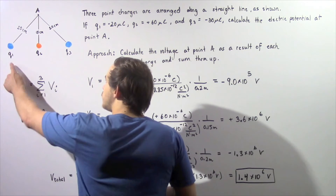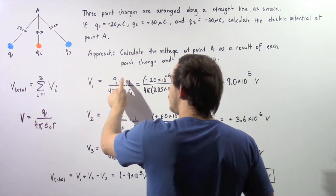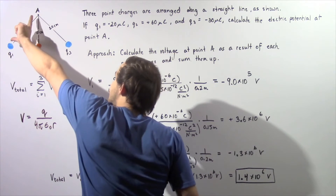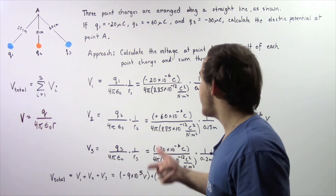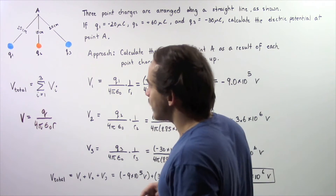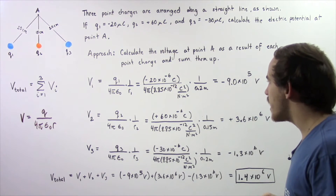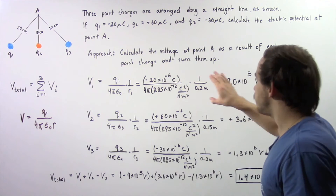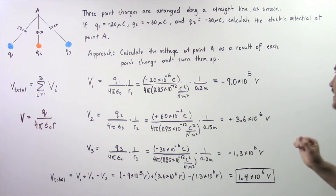Let's begin with charge Q1. The voltage at point A as a result of Q1 is equal to Q1 divided by 4π epsilon-naught, multiplied by 1 divided by R1, where R1 is the distance in meters. Q1 is negative 20 times 10 to the negative 6 coulombs, epsilon-naught is 8.85 times 10 to the negative 12, and R1 is 0.2 meters. Multiplying these out, the voltage at point A due to charge Q1 is negative 9 times 10 to the 5 volts.